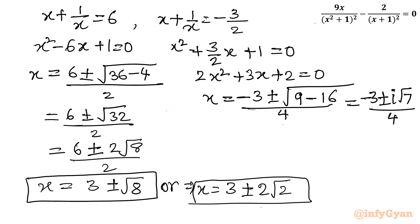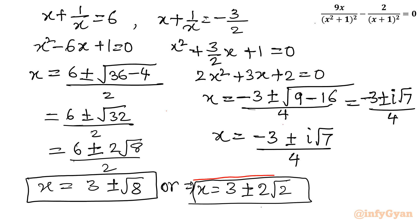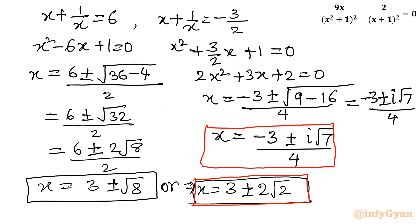So our final solutions are: two real values x = 3 ± 2√2, and two imaginary values x = (−3 ± i√7) / 4. Cross-checking: none of these solutions equals −1, remembering the domain limitation, and none equals ±i. So all four solutions are accepted. I hope you liked this video. Thank you so much for watching. Do not forget to like, share, and subscribe. Bye-bye till next video. Good luck.